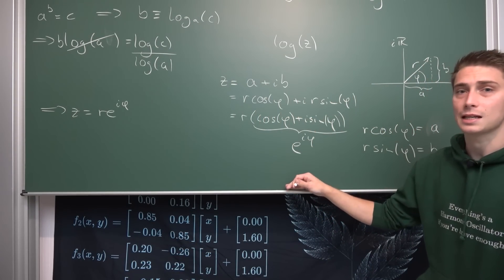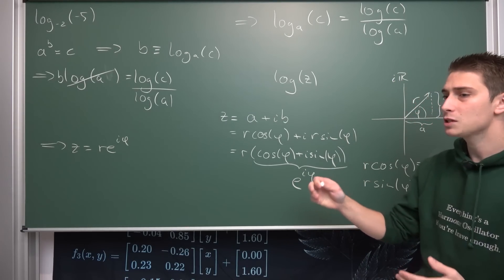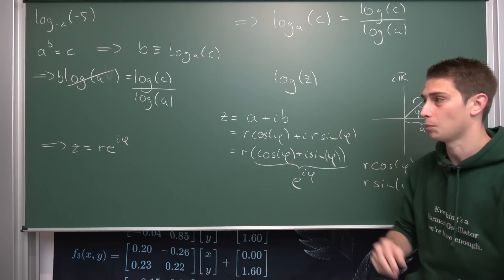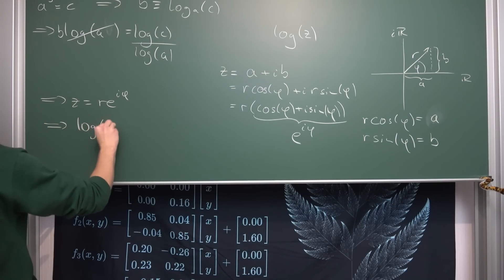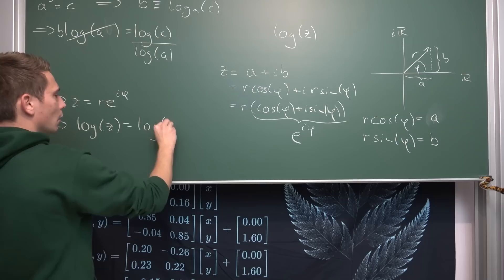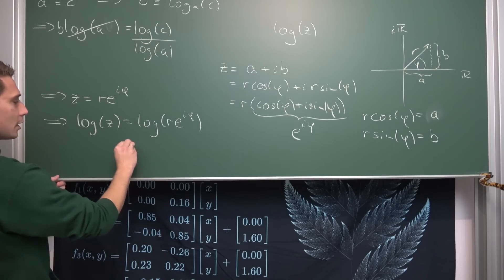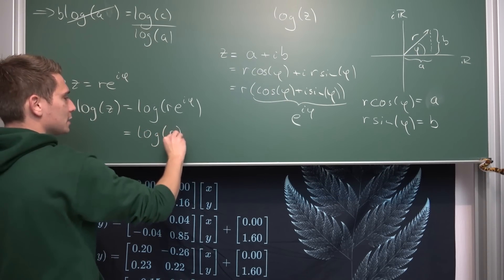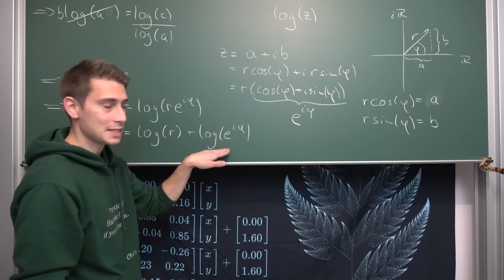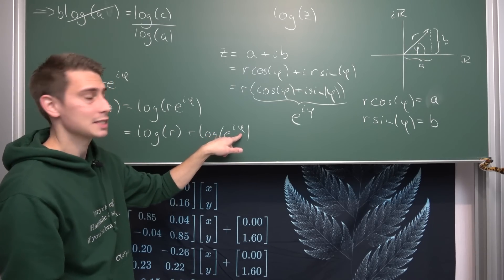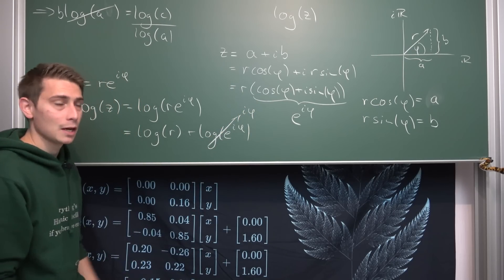Now we can go ahead and apply the complex-valued logarithm — a multivalued mapping — to both sides of this equation. This leaves us with the natural log of complex number z being nothing but the natural log of r·e^{i·phi}. Using the logarithm property, we can break this up into the logarithm of the magnitude plus the logarithm of e^{i·phi}. Since log base e of e to something is just that something, this gives us the natural log of r plus i times the argument phi.